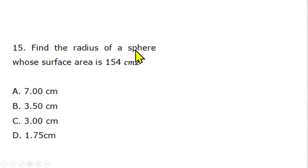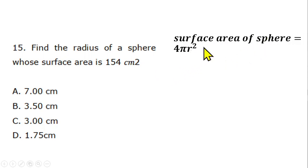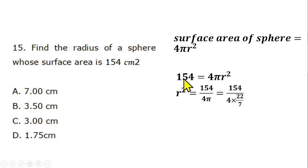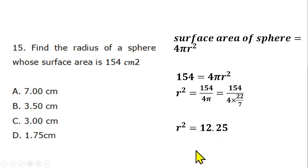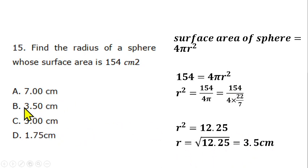Question 15: Find the radius of a sphere with surface area 154 cm². Using surface area = 4πr², we have 154 = 4πr². Dividing: r² = 154/(4 × 22/7) = 12.25. Taking the square root: r = 3.5 cm. Option B is correct.